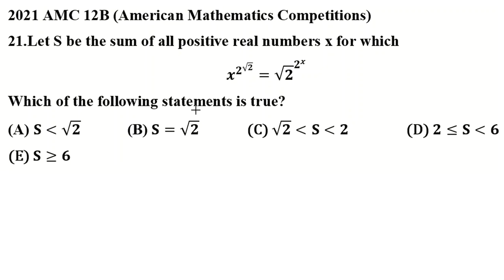In this problem, we want to consider the ideas. Let's read problem 21: Let s be the sum of all positive real numbers x for which x to the power of 2 to the power of root 2 equals root 2 to the power of 2 to the power of x.